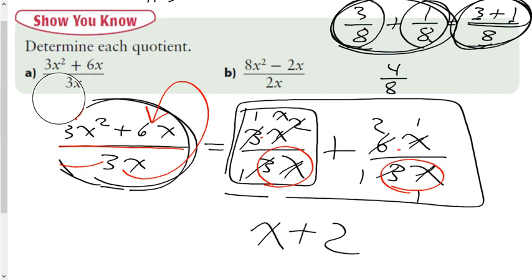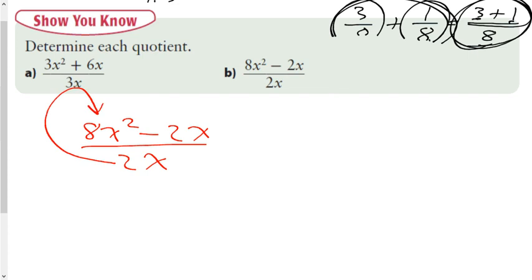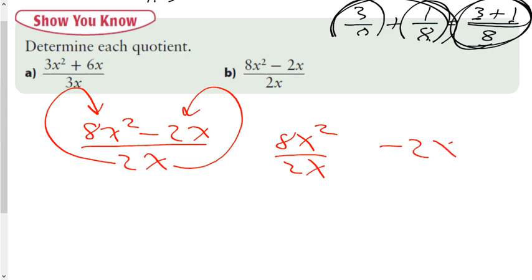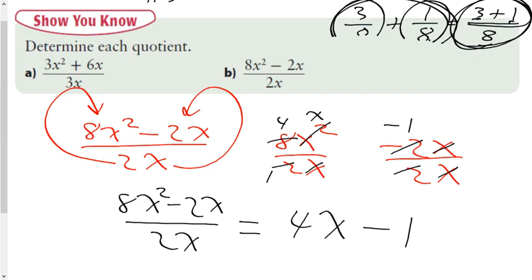A lot of writing there — looks like hieroglyphics. Now for part b: each term in the binomial must be divided by the monomial using the distributive property of division. 8x² divided by 2x: coefficients give 4, x² divided by x gives x — so 4x. Negative 2x divided by 2x: negative 2 divided by 2 is negative 1, x divided by x cancels — so just minus 1. Therefore 8x² − 2x divided by 2x equals 4x − 1.